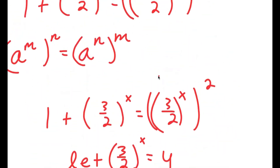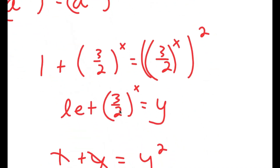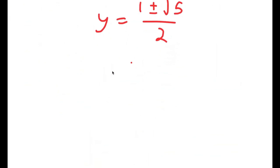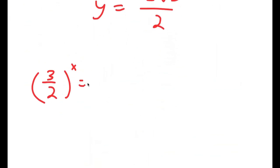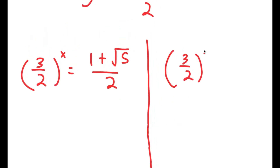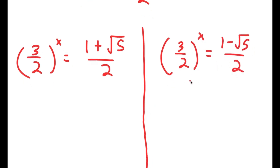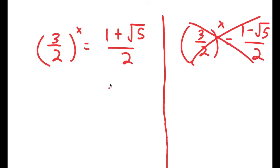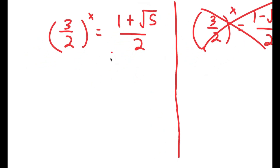However, we're not done yet because we're solving for x, not y. Remember we let (3/2)^x equal y, so this gives two equations. We can already eliminate the equation where (3/2)^x equals (1 minus square root of 5) over 2, because 1 minus the square root of 5 is a negative number, and you can't raise a positive number to a power and get a negative result. So the only valid equation is (3/2)^x equals (1 plus square root of 5) over 2.